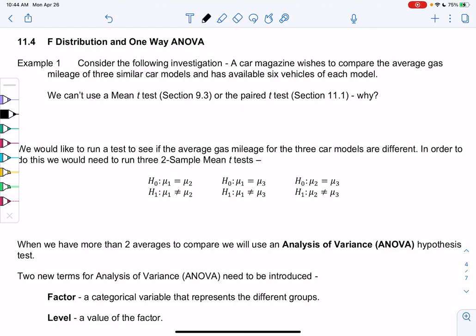Section 11.4, the F-distribution. So that'll be instead of a T-curve, a Z-curve, or chi-square. The F-distribution and one-way ANOVA. So this is another hypothesis test.